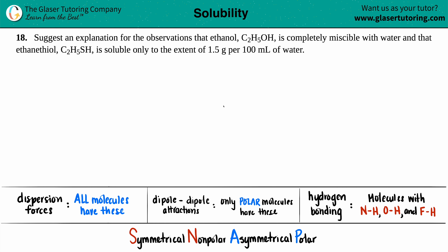Number 18: suggest an explanation for the observations that ethanol, which is C2H5OH, is completely miscible with water, and that ethane thiol, which is C2H5SH, is soluble only to the extent of 1.5 grams per 100 mL of water.